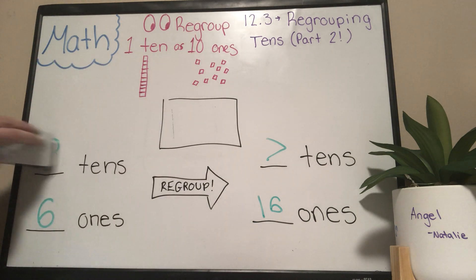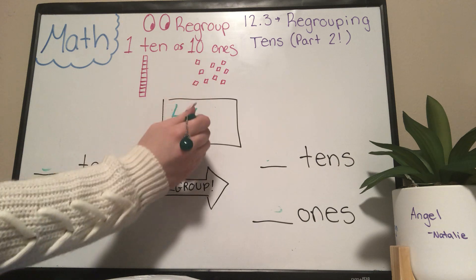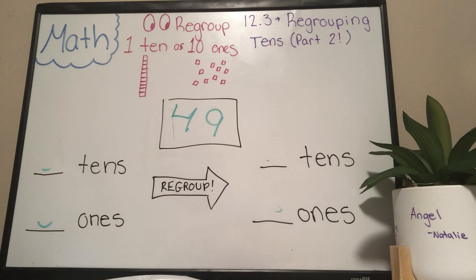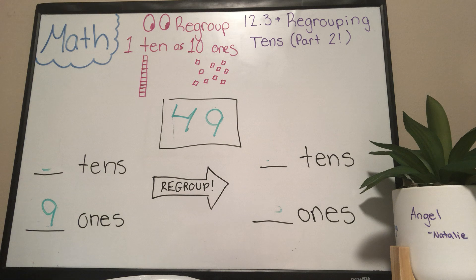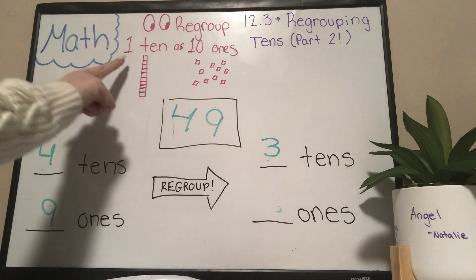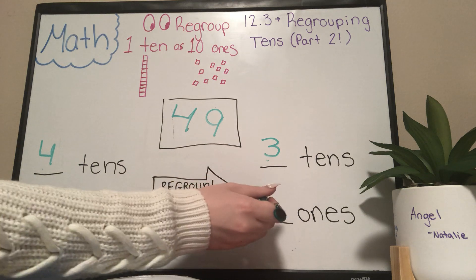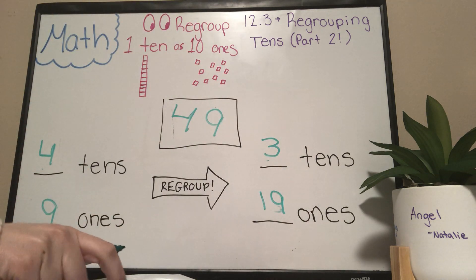The next number is forty-nine. How many ones are in forty-nine? Nine ones. And how many tens? There are four tens. We're taking one ten away. What is four minus one? Three. One ten is going to be ten ones. So what is nine plus ten? That is nineteen. There's your answer.